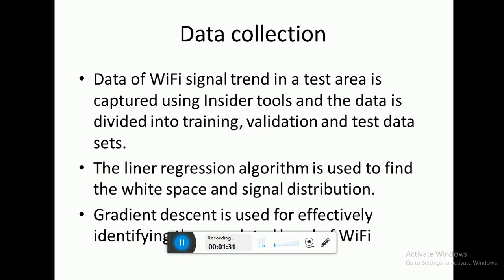For this, in the test area, we collected data over the period of a week — the signal strength and channels used by various Wi-Fi routers operating in the region. The data is divided into three parts: training data, validation data, and test data sets. The linear regression algorithm is used to find the white spaces and the distribution of signal occupancy of the Wi-Fi signals. Finally, gradient descent is used effectively to identify the white spaces of the Wi-Fi.